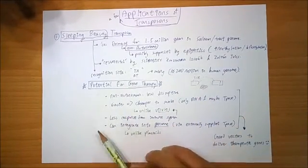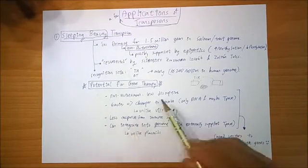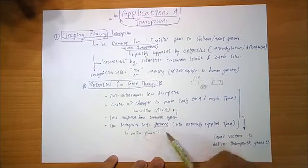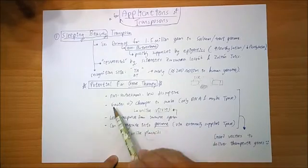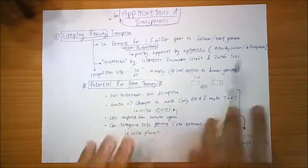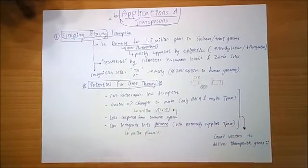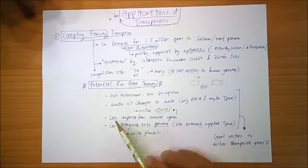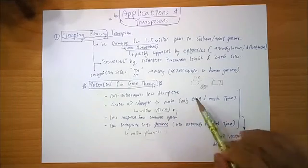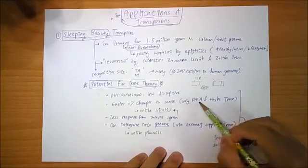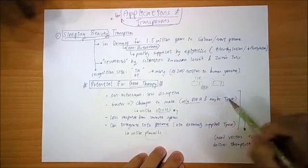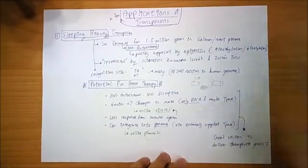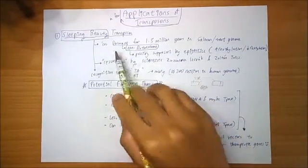There are some pros of using this instead of traditional vectors, like viruses or plasmids. First of all, this is non-autonomous. So it's less disruptive, as mentioned before. They won't cause so many mutations. And it's easier to make, and cheaper to make, because it's only DNA and maybe a bit of transposase enzymes.